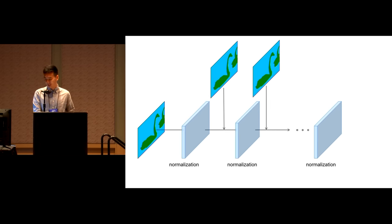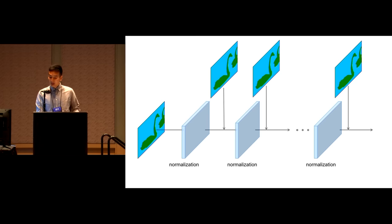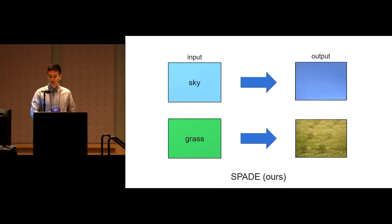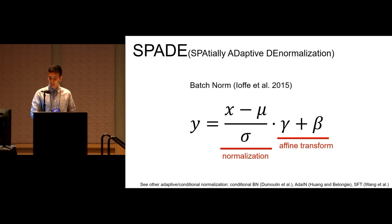Therefore, to preserve semantic information, after every normalization, we propose to re-input the semantic map. Our method produces plausible texture for each class label, confirming that the semantic signal is not lost. We extend the idea of conditional batch norm, which has been popular in class-conditional image generation and super-resolution tasks. For our task, we make the affine transformation spatially adaptive, conditioned on the input semantic layout. We pass the semantic map through convolutional layers to produce feature tensors, then after normalization, we do element-wise operations using the feature tensors.